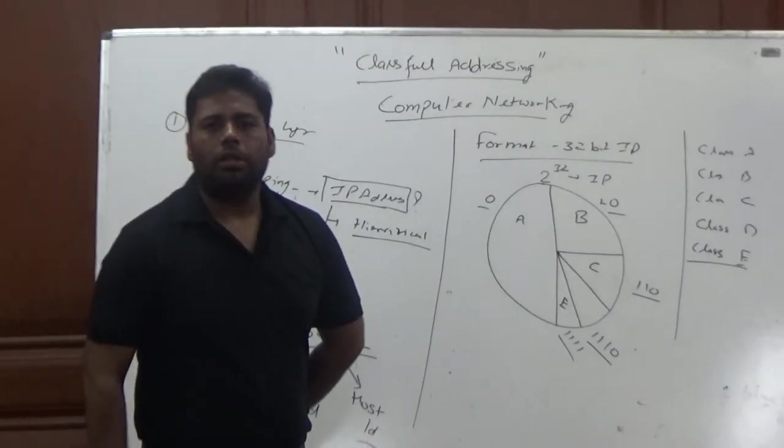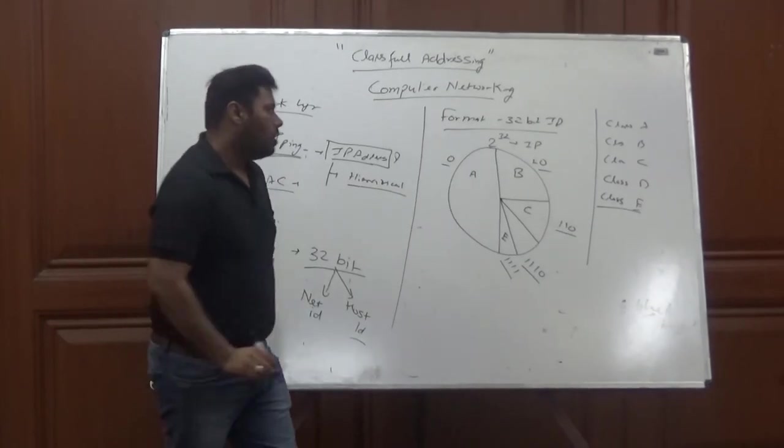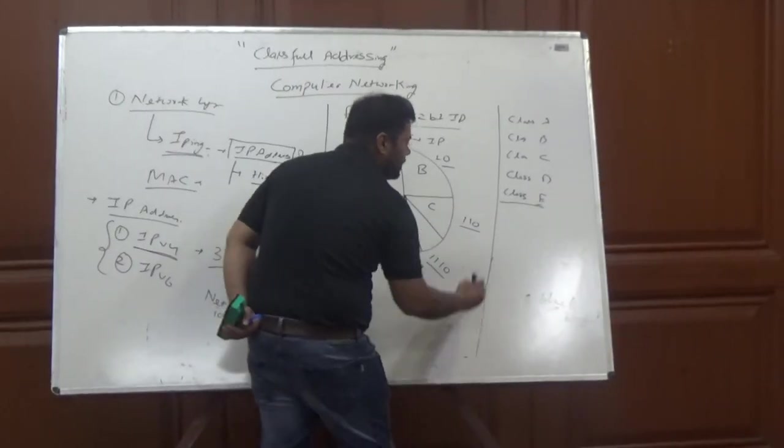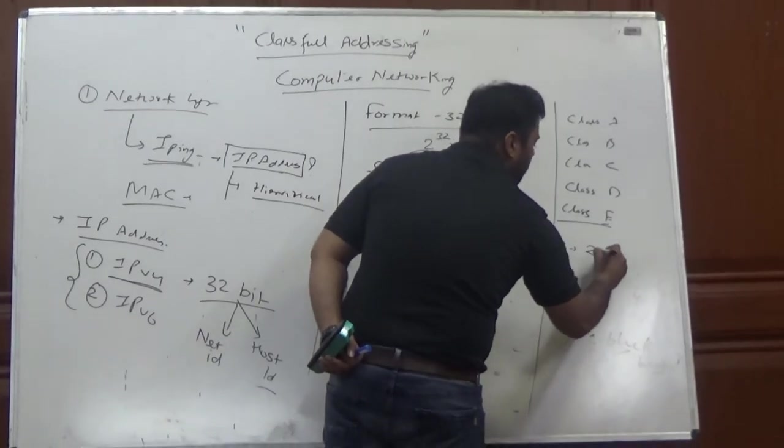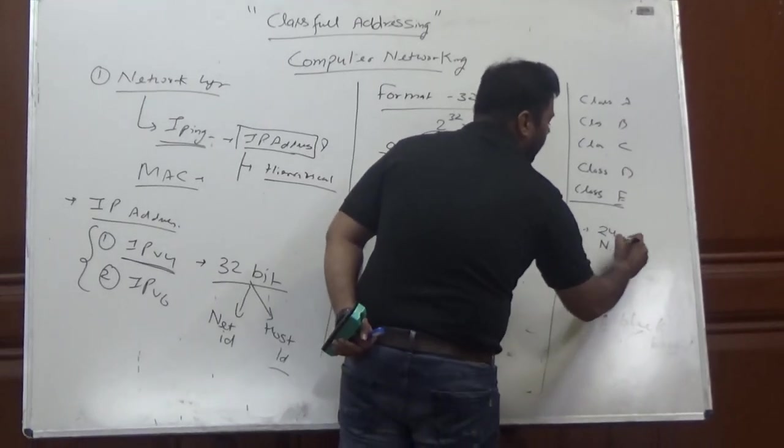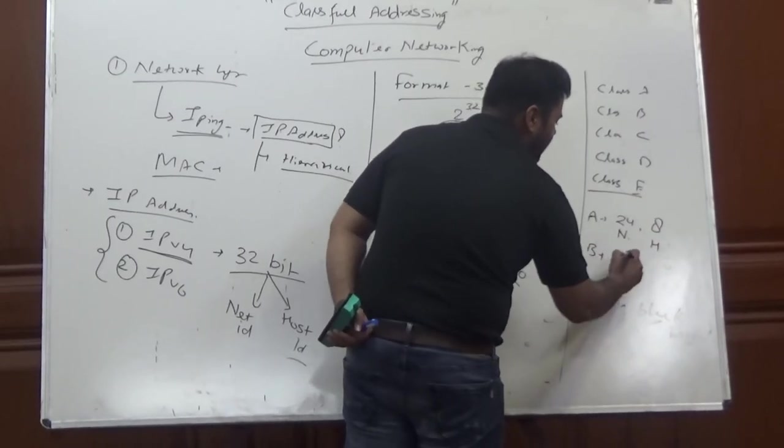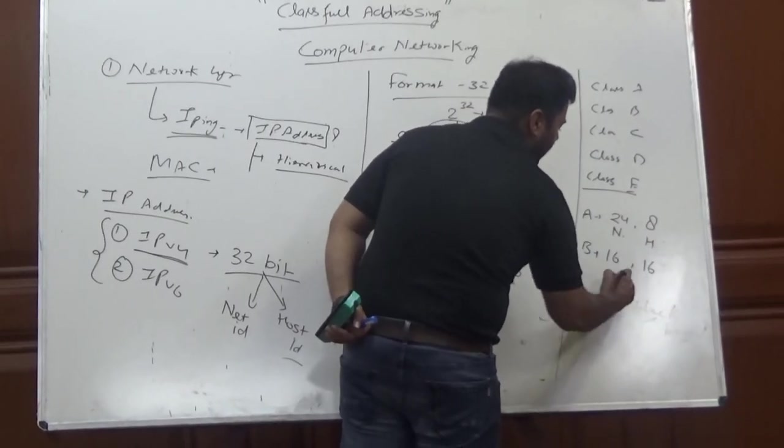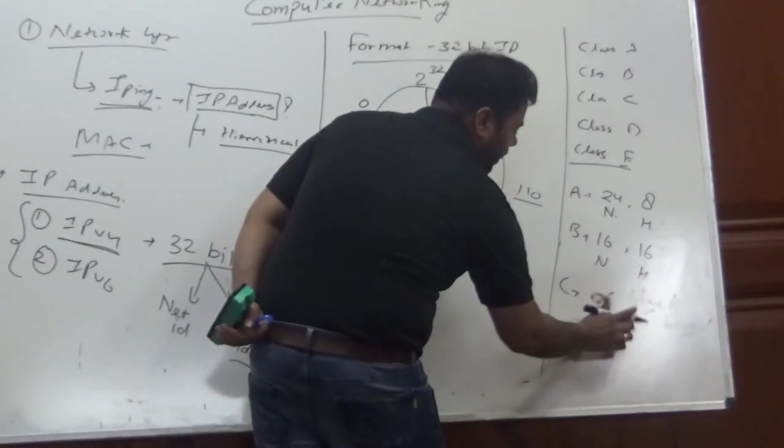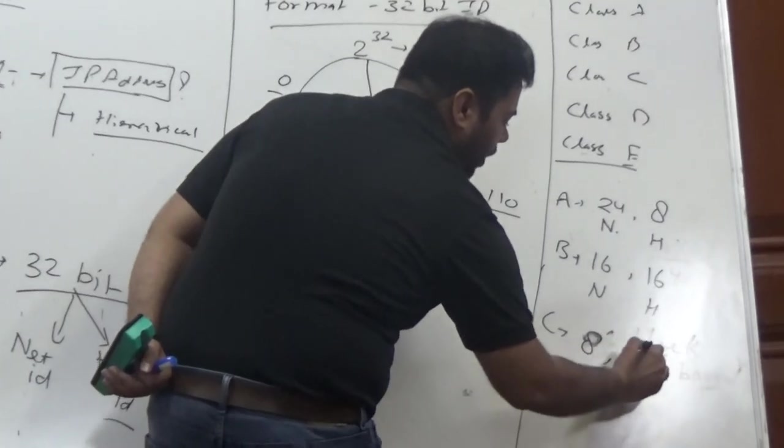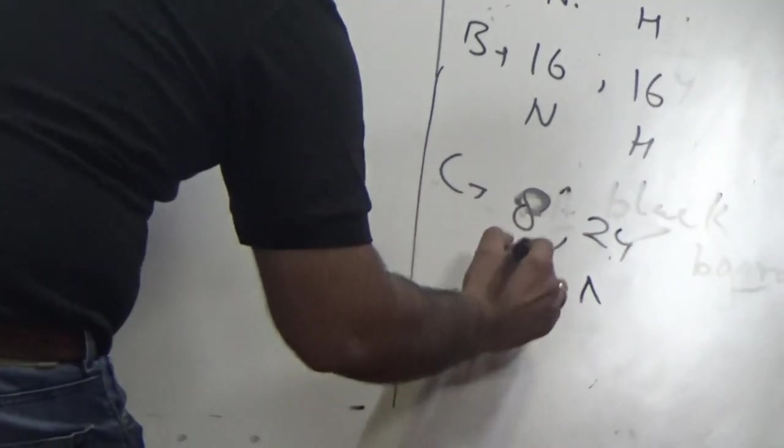These classes are segmented as: Class A has 24-bit for HostID and 8-bit for NetID. Class B has 16-16 bit for host and NetID. Class C has 8-bit and 24-bit for host and NetID.